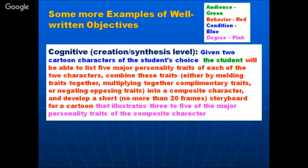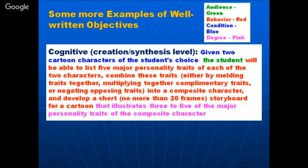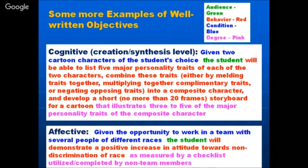This objective clearly specifies the behavior — composing a character and developing a storyboard of no more than 20 frames. The degree is that it illustrates three to five major personality traits of a composite character. The condition in blue is 'given two cartoon characters of the student's choice.' The student is the audience. So you are not only testing at the level of remembering or understanding, but at the level of creation — creating a character.